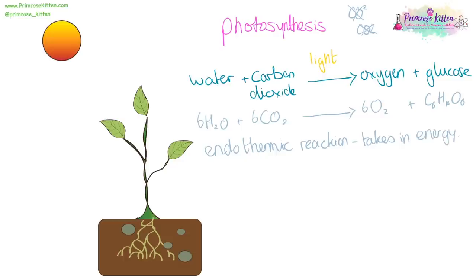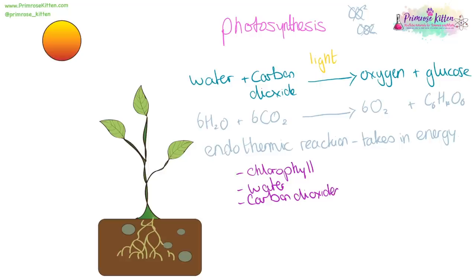There are certain requirements for photosynthesis. First of all, we are going to need chlorophyll — that is our green pigment in leaves. We are going to need water and carbon dioxide because they are our reactants. And then we are going to need sunlight. The levels of these can greatly affect how much photosynthesis takes place.